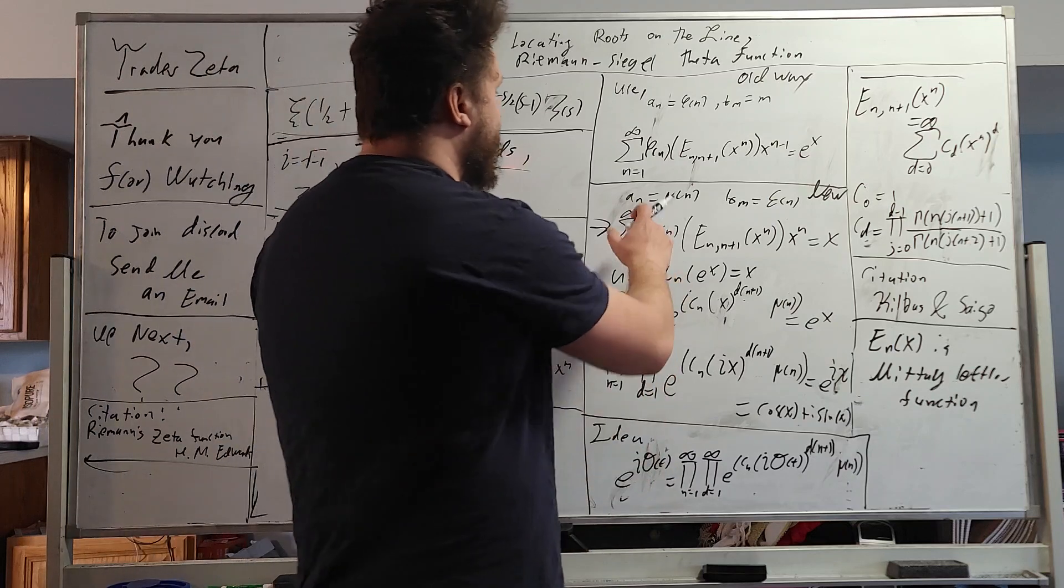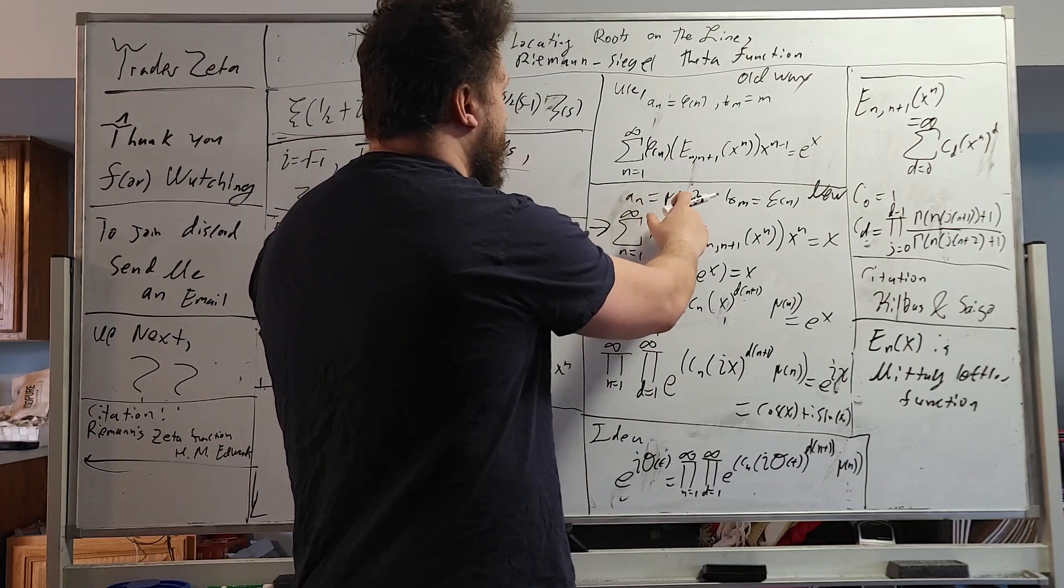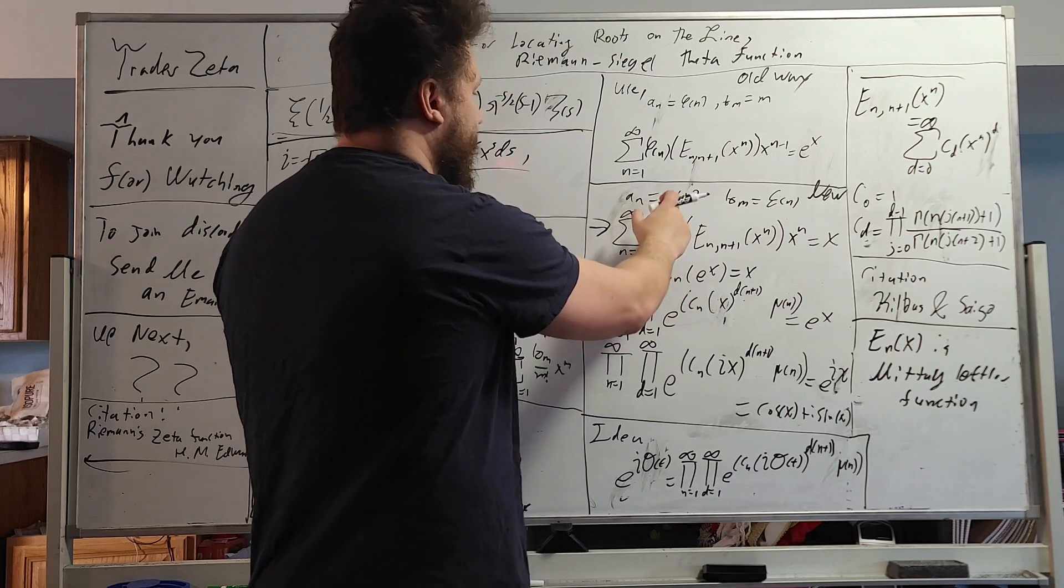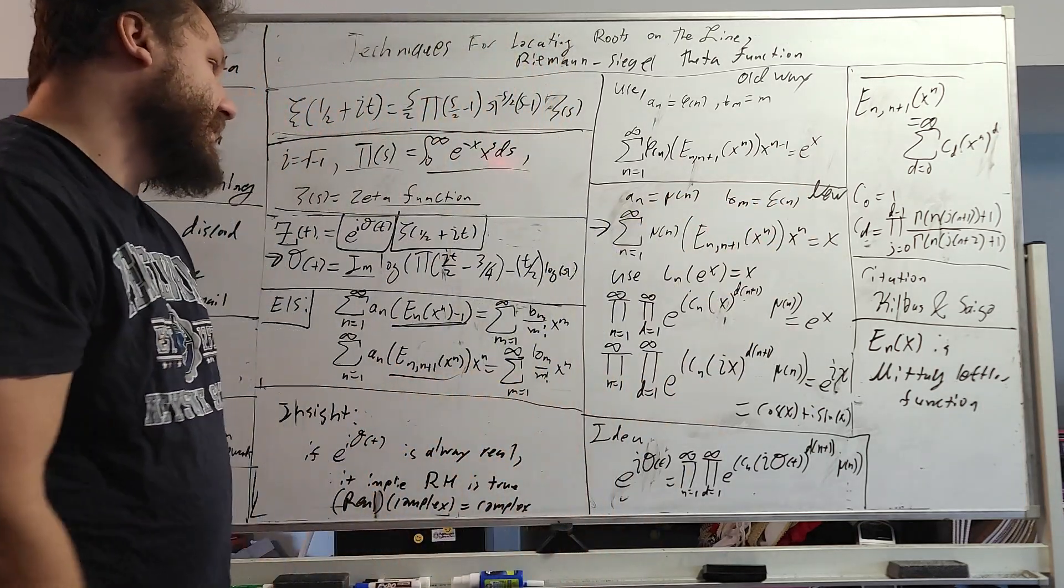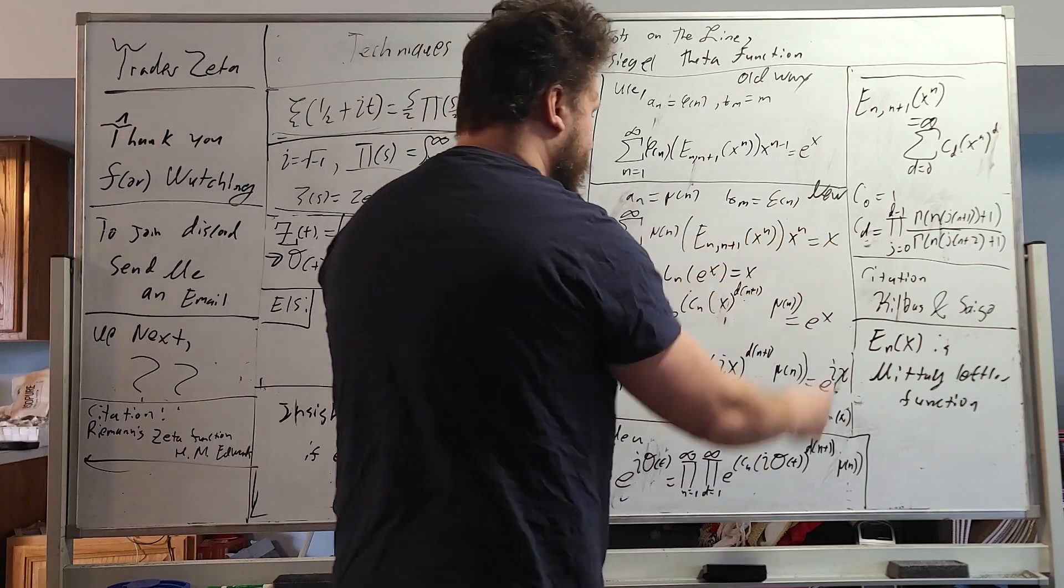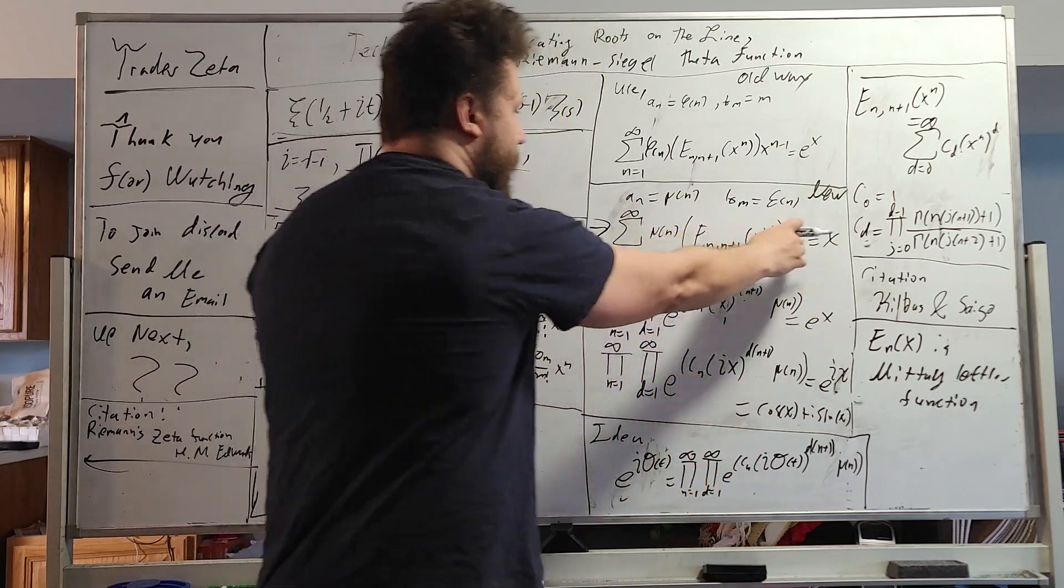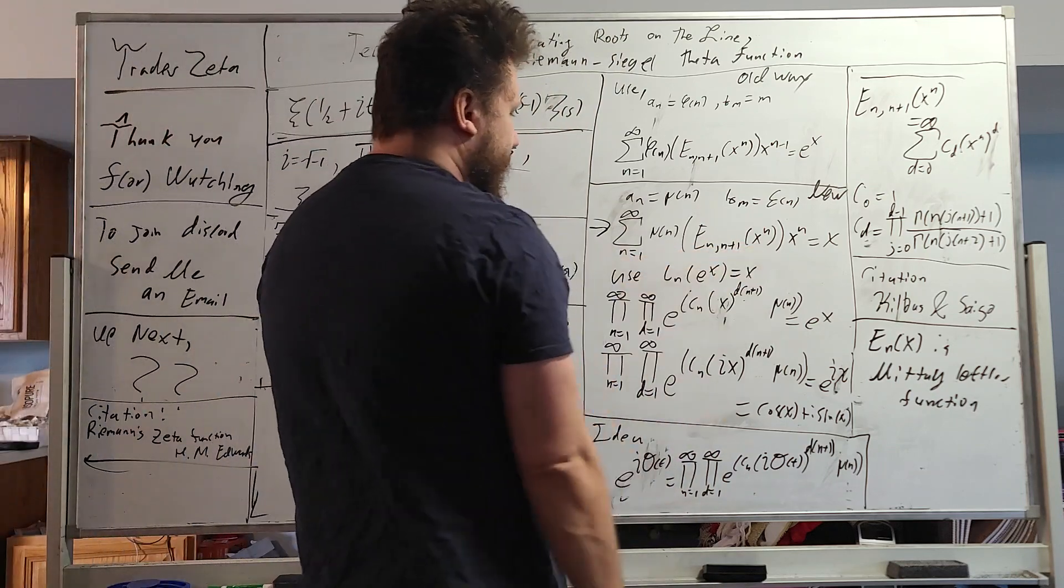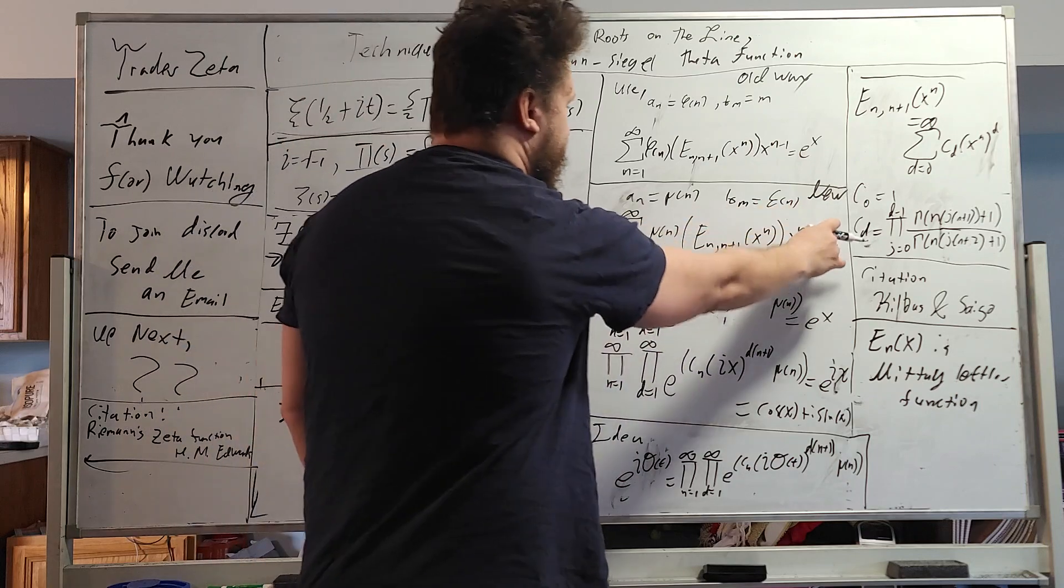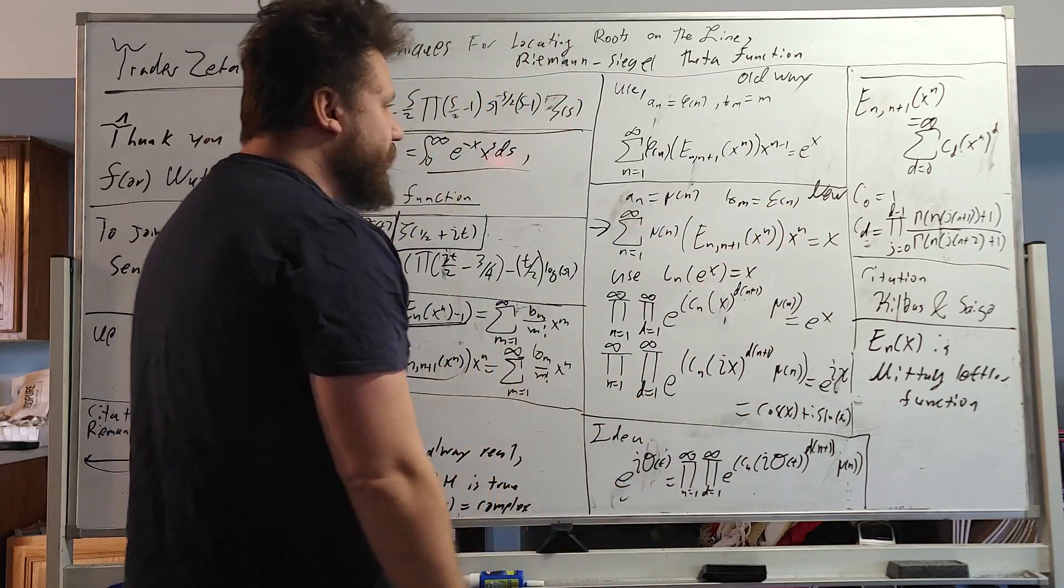So one of the things we can do is you can say, look, A sub n equals Mobius function of n, and B sub m equals this epsilon of n, and it gives us this right here. So this statement equals X. But we know that ln of e to the X equals X, so all we have to do is raise both sides to the E.